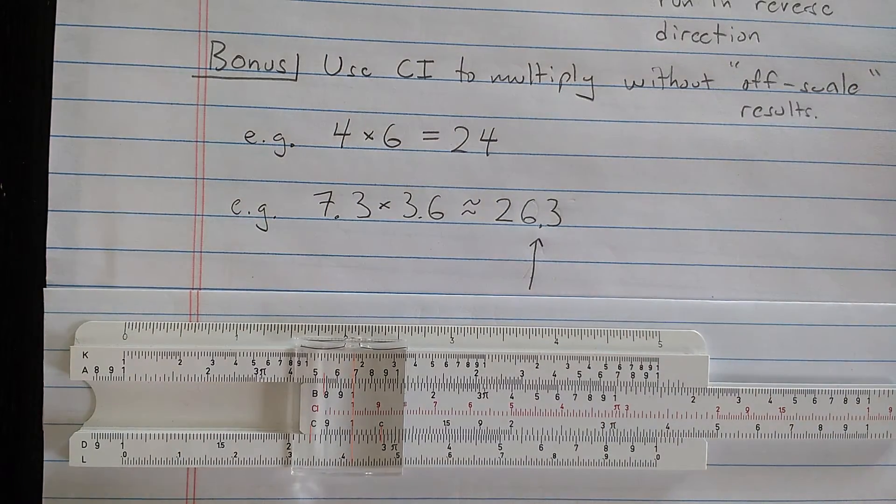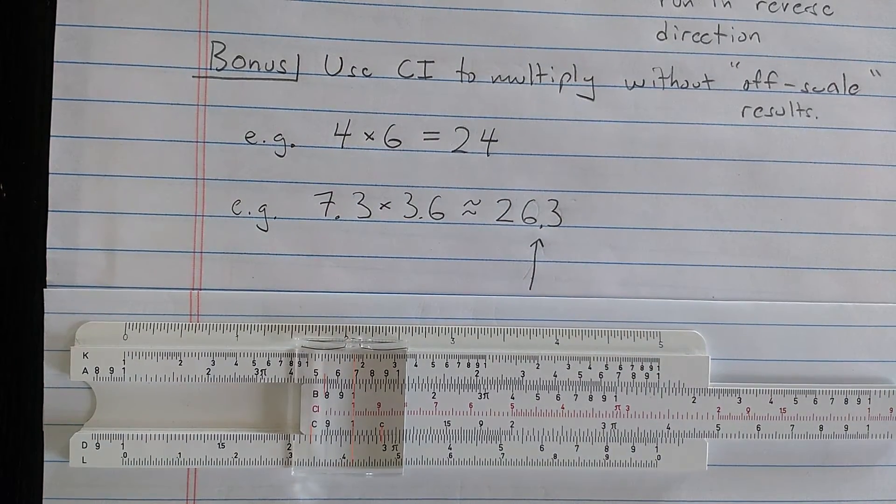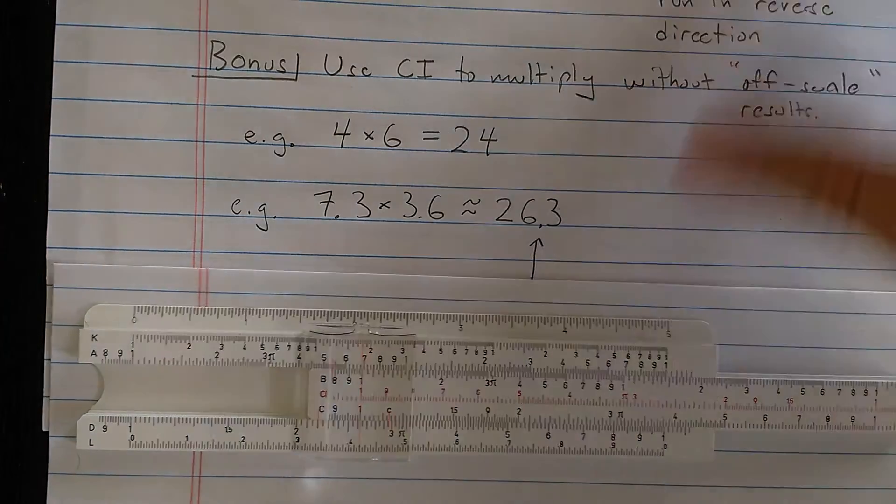So there's how to use the CI scale to avoid an off scale multiplication. Now, let's do a little review.